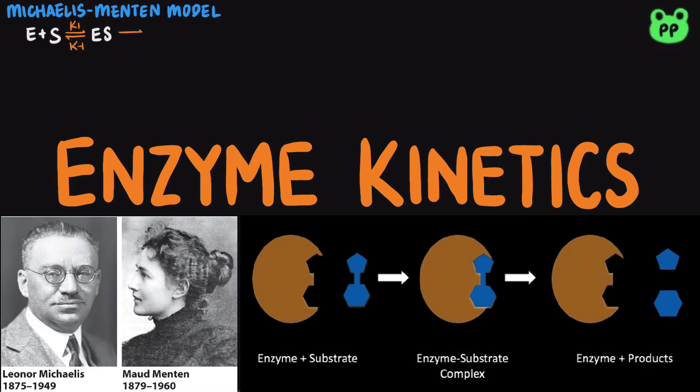The enzyme substrate complex then breaks down in a slower second step to produce the free enzyme E and the reaction product P, with the reaction rate of K2.